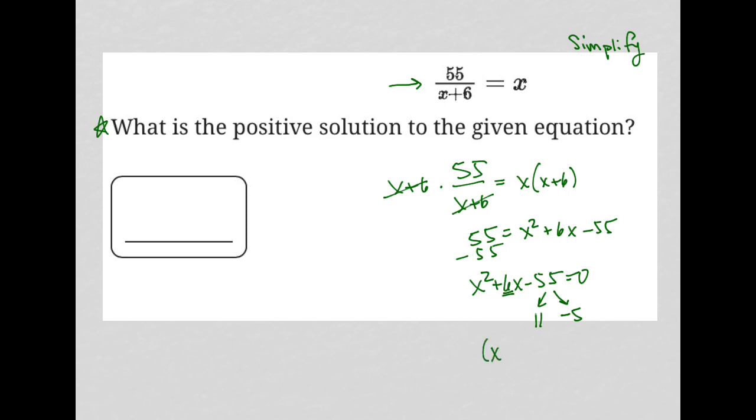So the factored form of this trinomial would be x plus 11, x minus 5 equals 0. Let's go up here for more space.